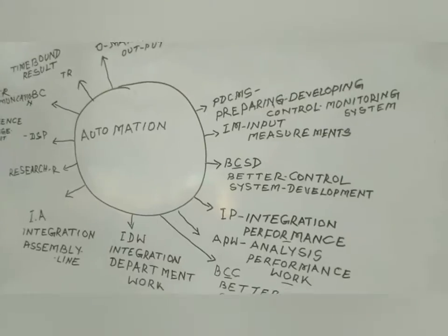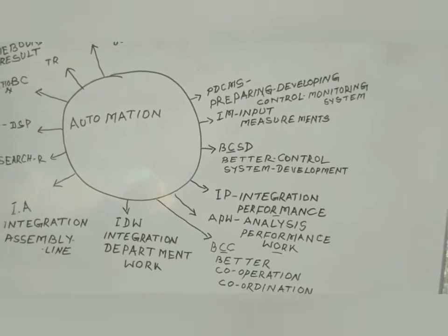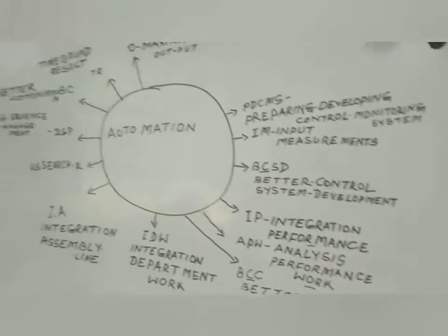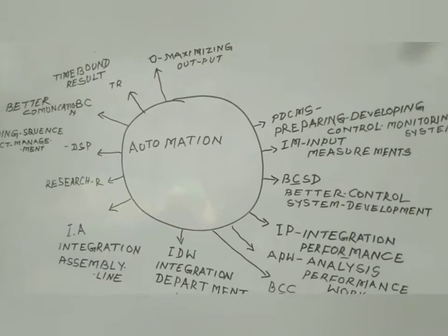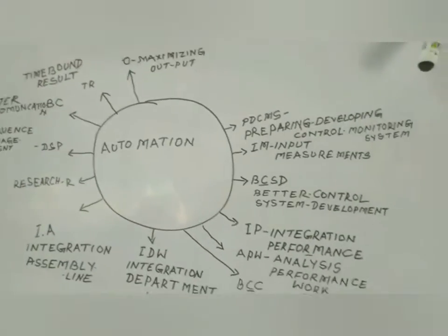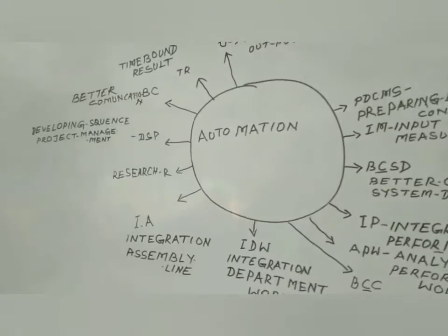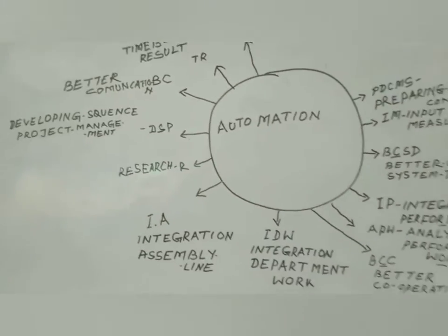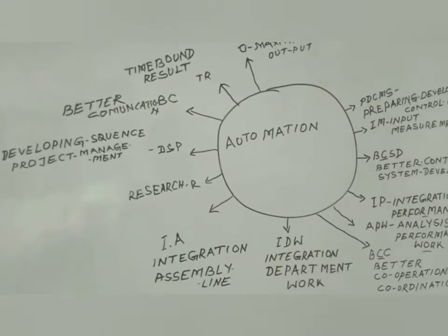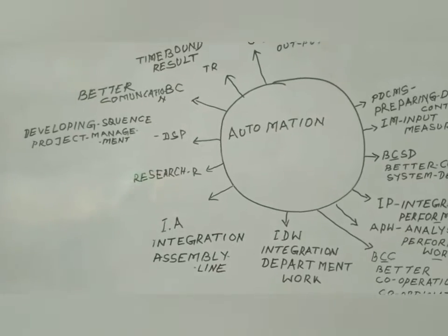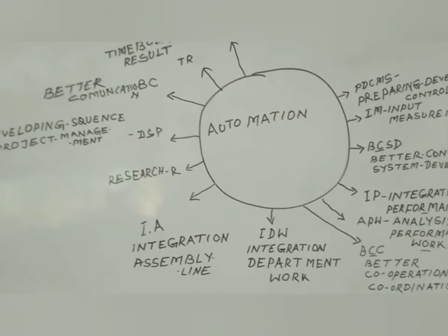Then there is preparing and developing a controlling system. If there is some lacking, then the developing system role is very much important. After that we go through research work — continuous research helps to develop the alternatives of the automation process.